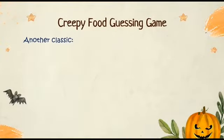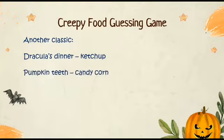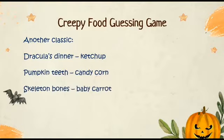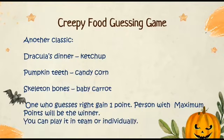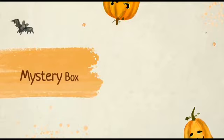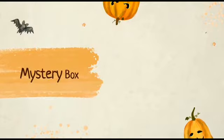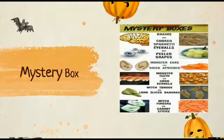Another classic idea: Dracula's dinner is ketchup, pumpkin tea is candy corn, and skeleton bones are baby carrots. One who guesses right gains one point, and the person with the maximum number of points is the winner. You can play it as a team or individually.